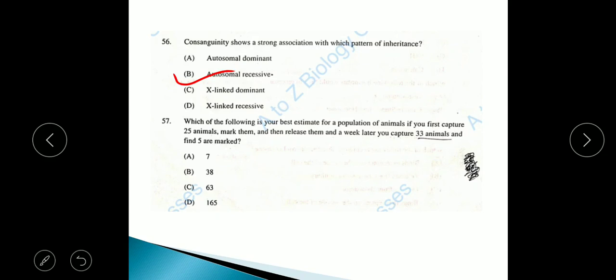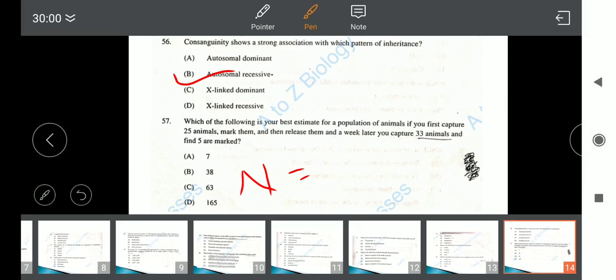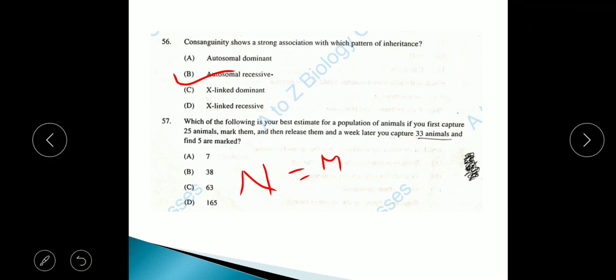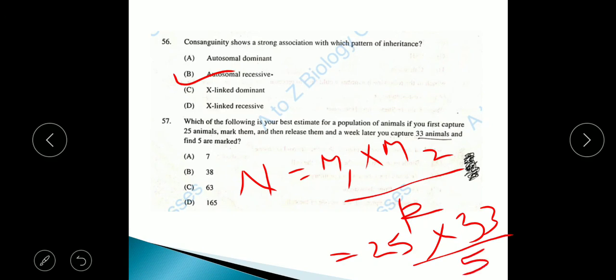Question 57: Which of the following is your best estimate for a population of animals if you first capture 25 animals, mark them and release them, and a week later you capture 33 animals and find 5 are marked? This question is based upon the mark recapture technique. The formula is n equals total individuals marked in sample 1 into marked in sample 2 divided by number of marked individuals recaptured in sample. Here they first captured 25 animals, then next capture 33 animals, divided by 5 are marked, means 5 animals are recaptured. The answer is 33 into 5, that is 165.